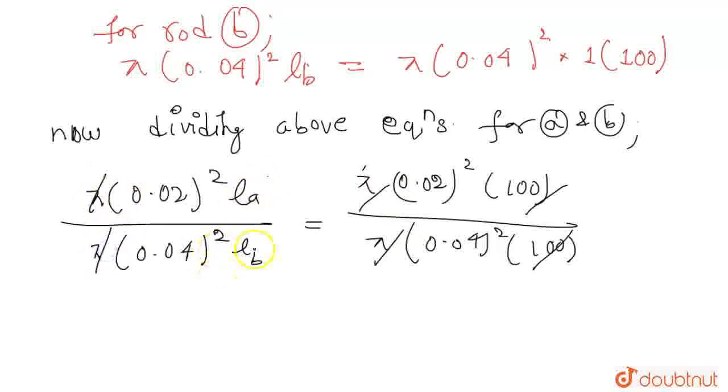Pi pi we cancel, so yes, LA by LB, this is 1 by 2. This is our answer.